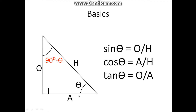A is the one adjacent to it, and H is this extremely long one — the longest side of this triangle that is opposite the 90 degree angle. So sin theta is the opposite line divided by the hypotenuse. Cosine theta is the adjacent line divided by the hypotenuse, and tangent theta is the opposite line divided by the adjacent line.